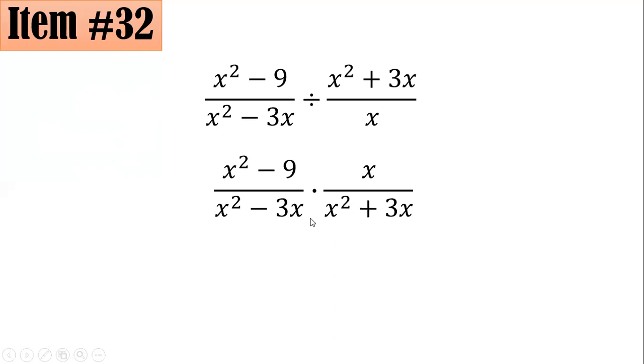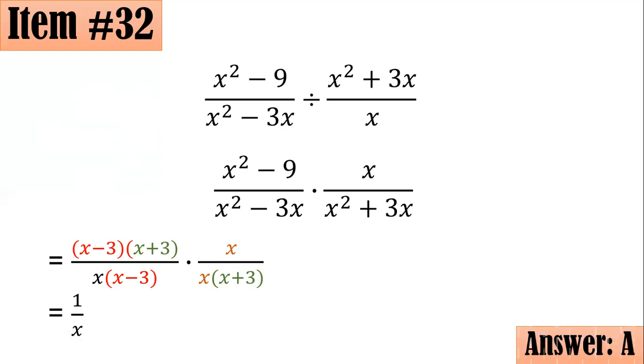And you see, we proceed now to the multiplication. So the same thing earlier, what we have to do is factor each polynomial as much as possible. So x squared minus 9 is factorable into x minus 3 times x plus 3. For the denominator, we have the GCF could be factored out. So we have x times x minus 3. The x could no longer be factored. x squared plus 3x could be factored as x times x plus 3. From here, you could see that the ones in red would cancel and become 1. The ones in green also. And the x's will also cancel here. And what is left is 1 over x. Letter A.